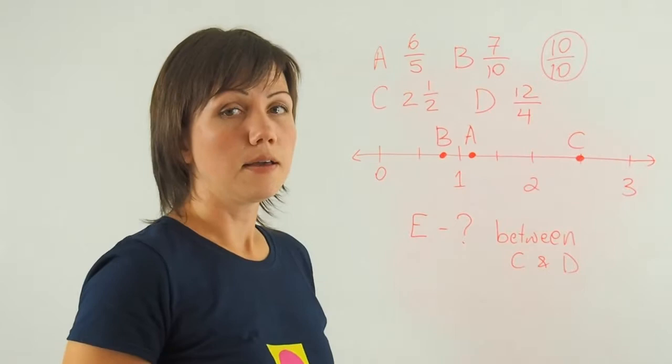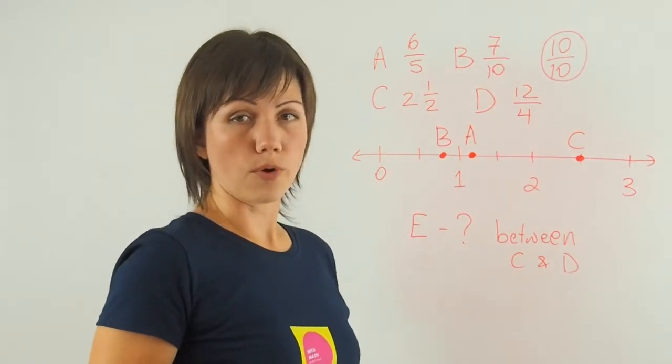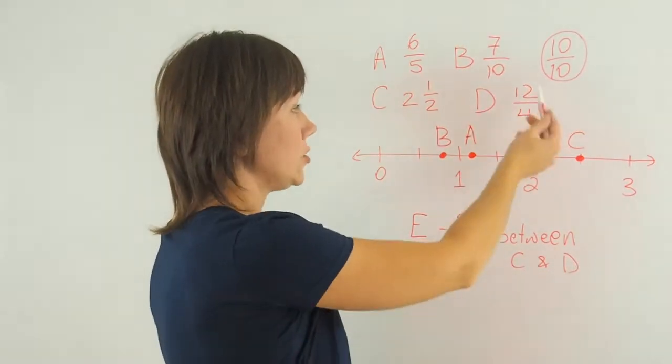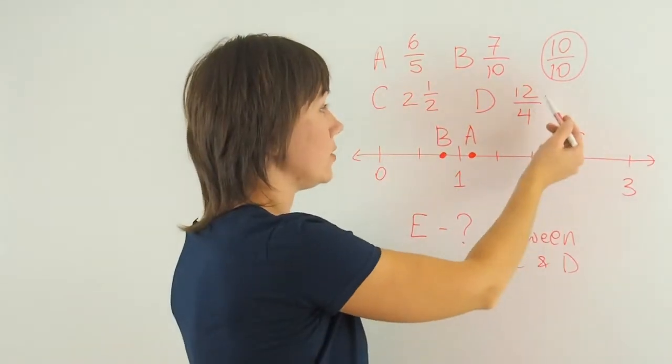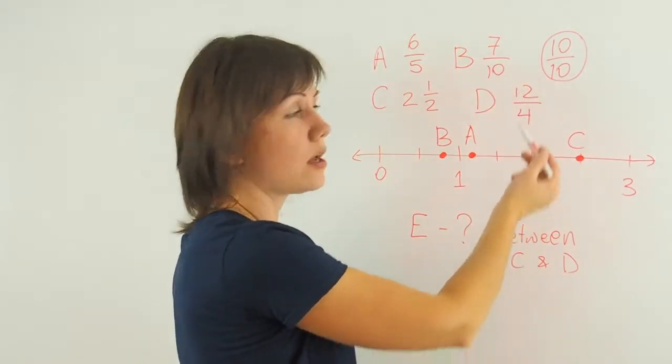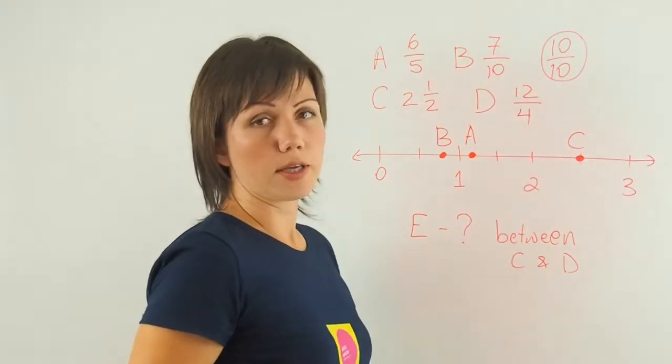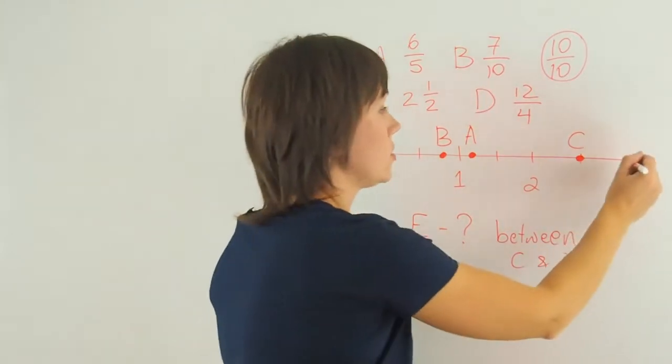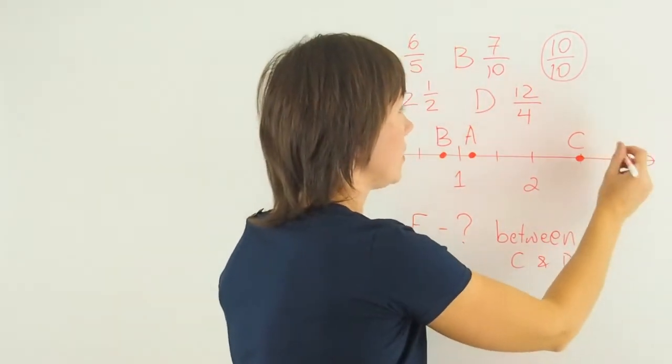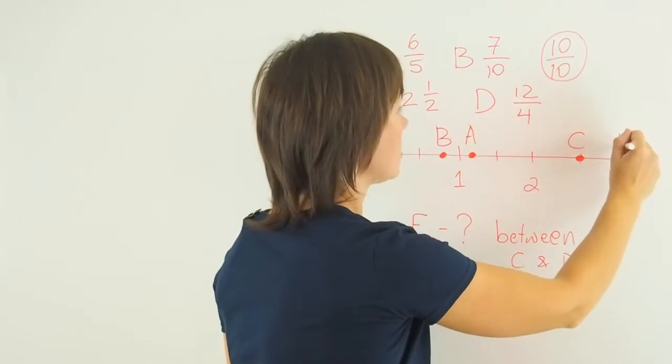Next one is 12 over 4. Again, I need to turn this improper fraction into a mixed number. So I'll divide the numerator by the denominator. 12 divided by 4 is 3. Three wholes, no fractions. So that point is right here at 3. This is my point D.